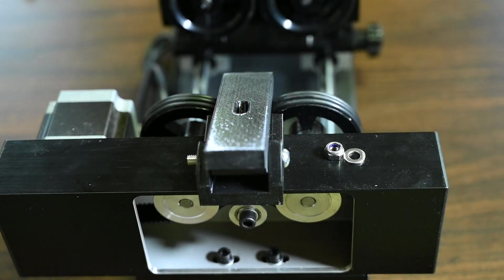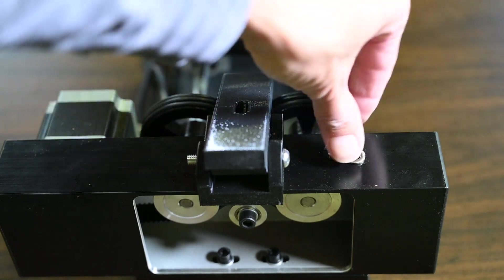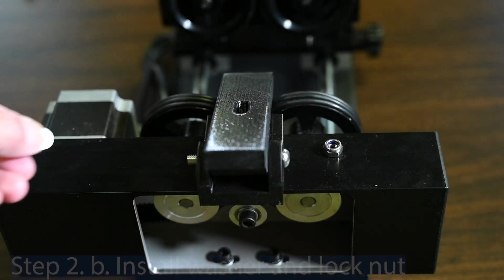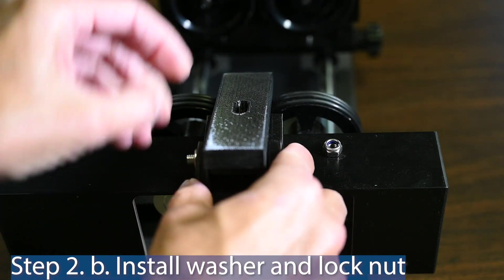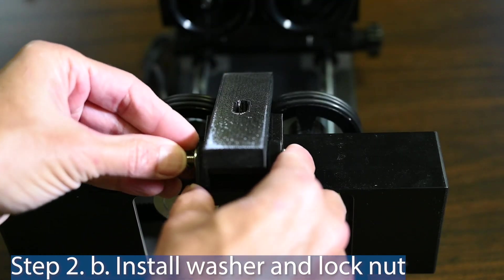It doesn't really matter which side you put this on but once you have it installed then install your washer and install your lock nut.